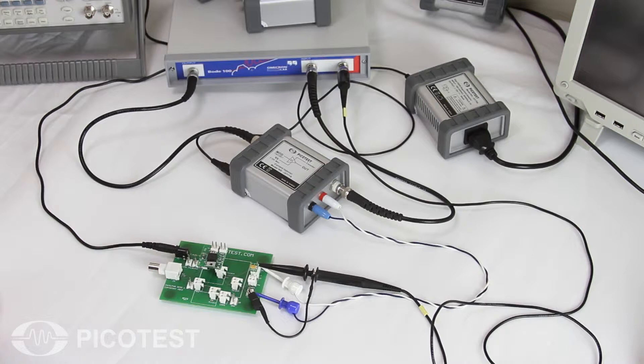The 50 ohm current monitor port on the current injector allows us to easily monitor the load current with an output voltage representing 1 amp per volt.